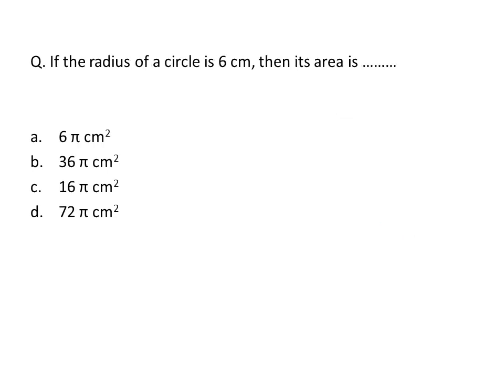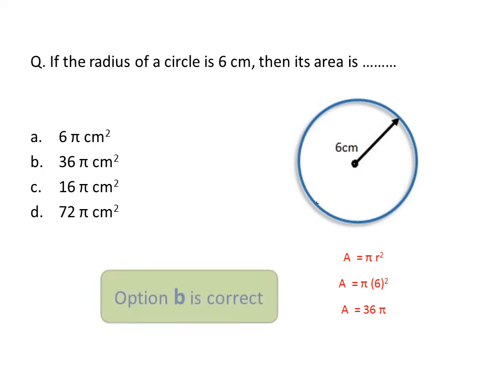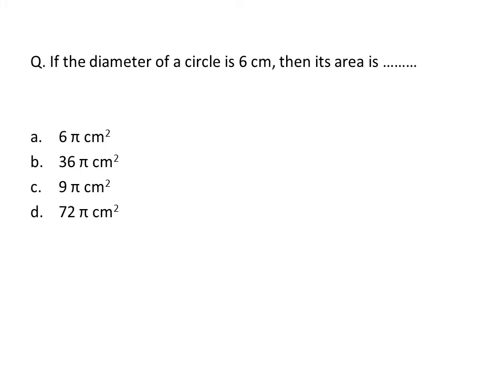Next question: if the radius of a circle is 6 centimeters, then its area is? We know the area formula for a circle is A = π r². The radius = 6 centimeters. Substituting: A = π × 6² = π × 36 = 36π square centimeters. Option B is correct.